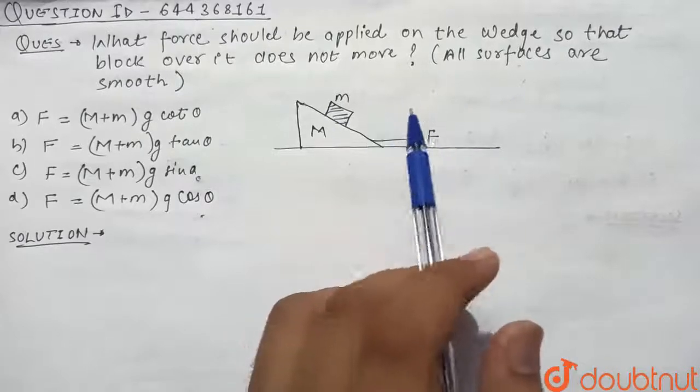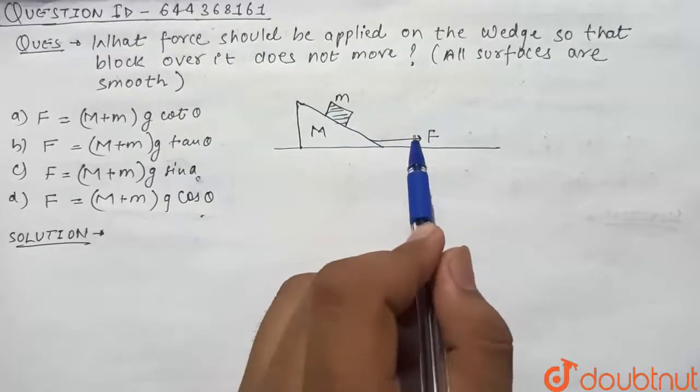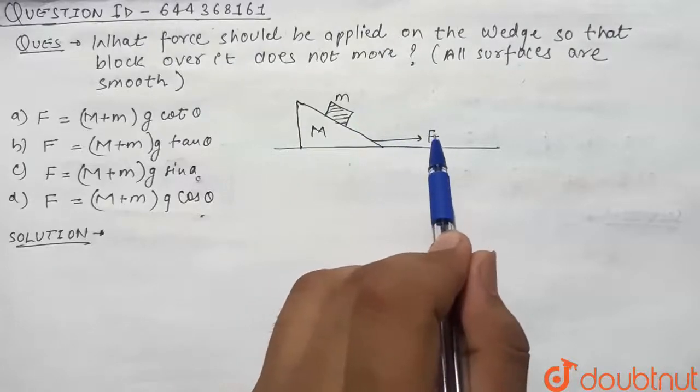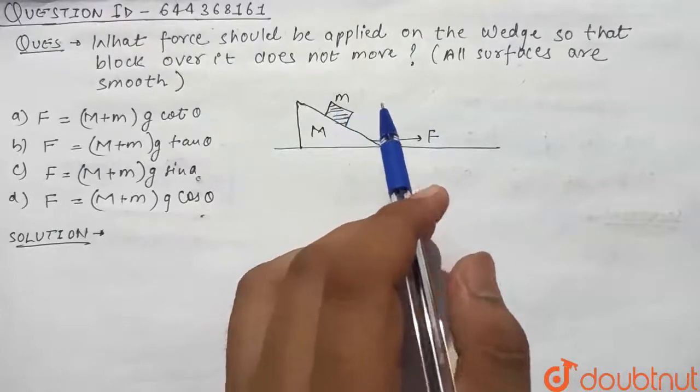In this question we have been given a wedge and a block, and a force F is acting on the base. It is asking what is the value of F so that the block on the wedge does not move.